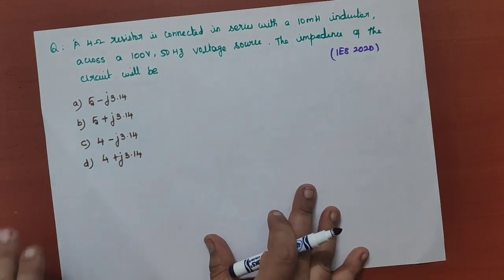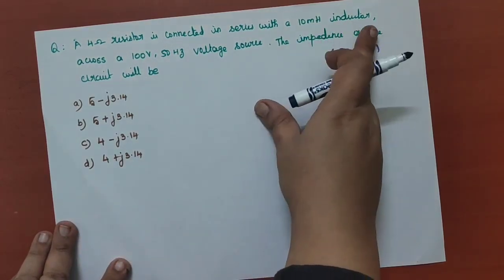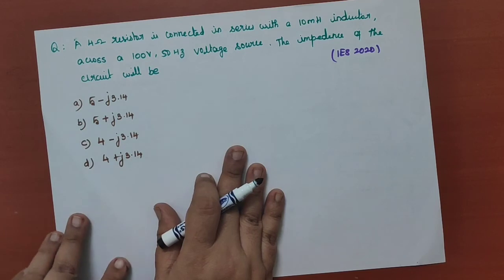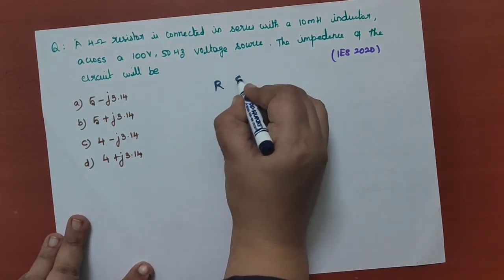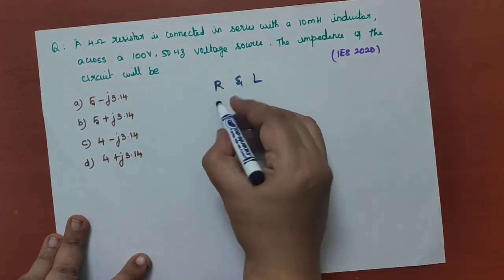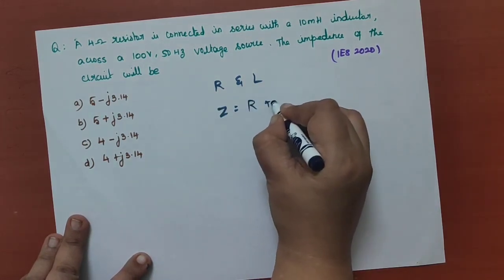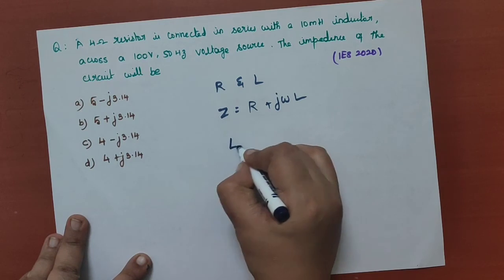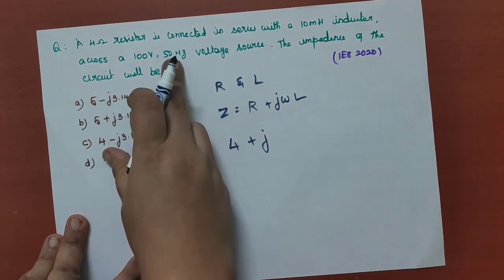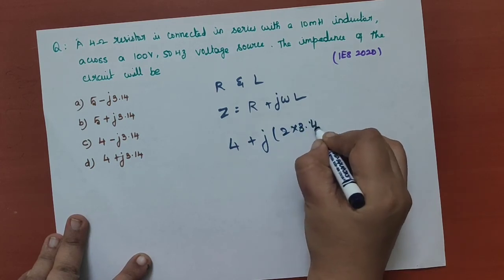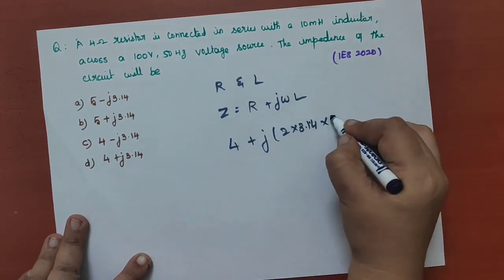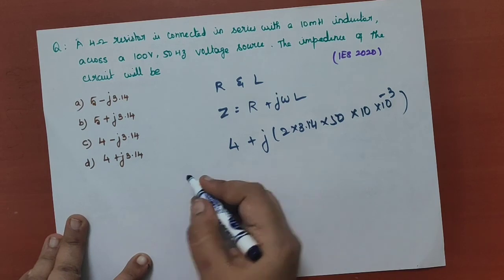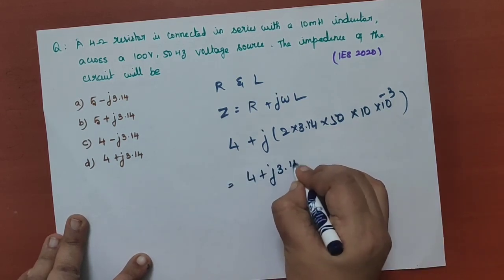Next question: a 4-ohm resistor is connected in series with a 10 millihenry inductor across a 100-volt, 50-hertz voltage source. The impedance of the circuit is asked. Total impedance Z equals R plus j omega L. Substituting: R equals 4, omega equals 2 pi f equals 2 times 3.14 times 50, and L equals 10 times 10 to the power minus 3. When simplified, we get Z equal to 4 plus j 3.14.